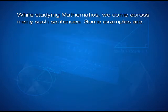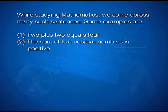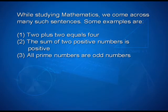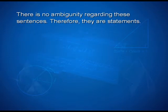While studying mathematics, we come across many such sentences. Some examples are: 2 plus 2 equals 4; the sum of two positive numbers is positive; all prime numbers are odd numbers. Of these sentences, the first two are true and the third is false. There is no ambiguity regarding these sentences. Therefore, they are statements.